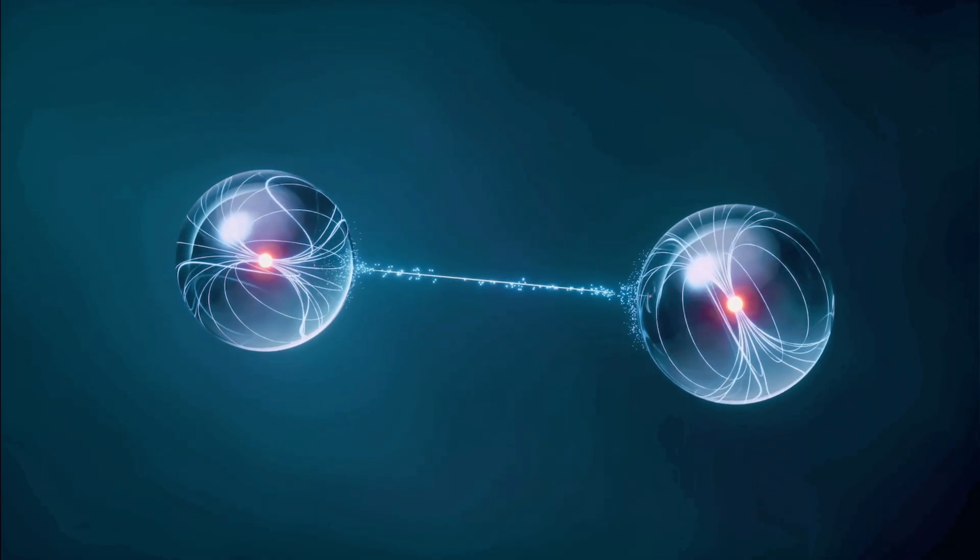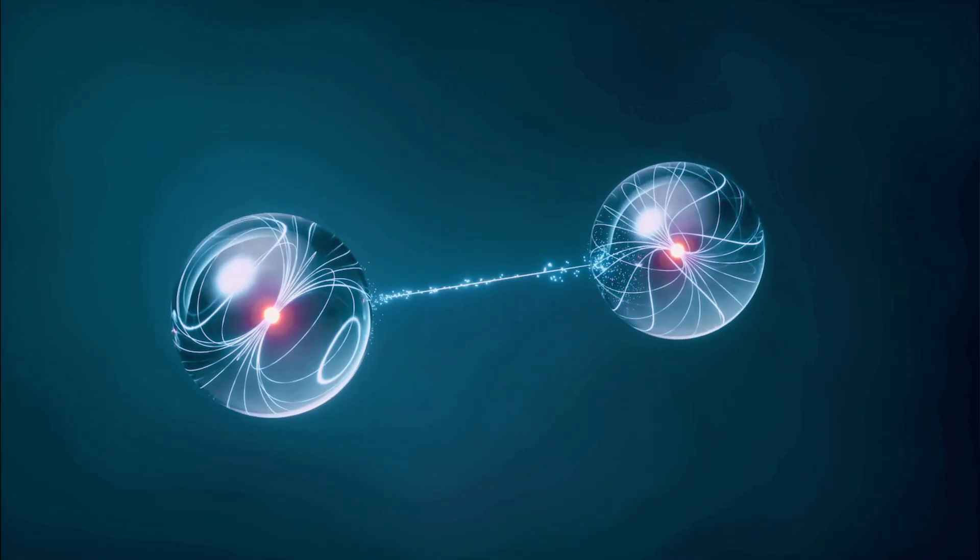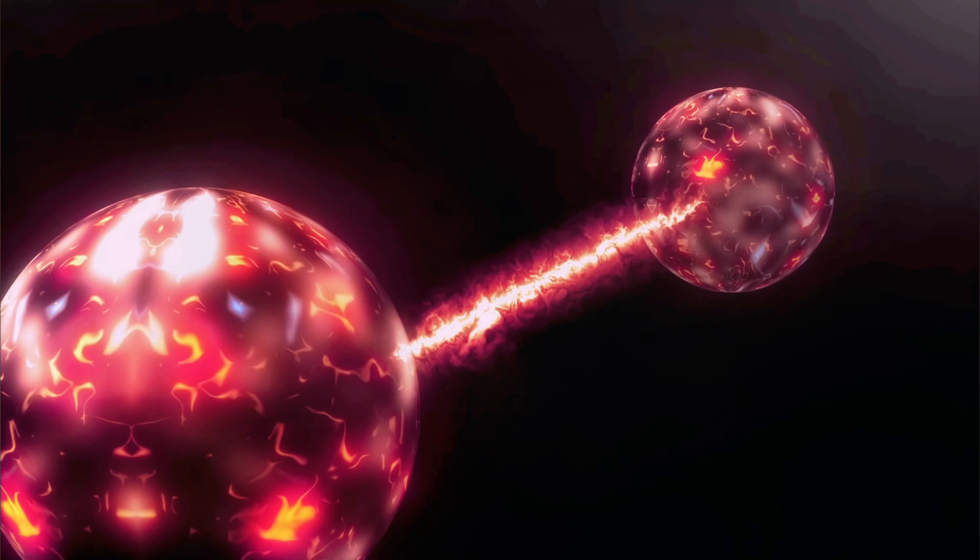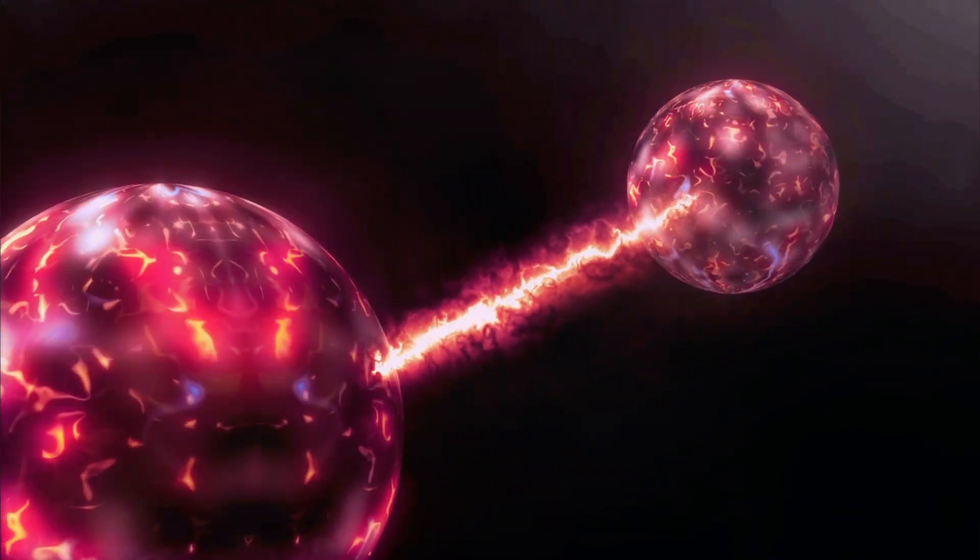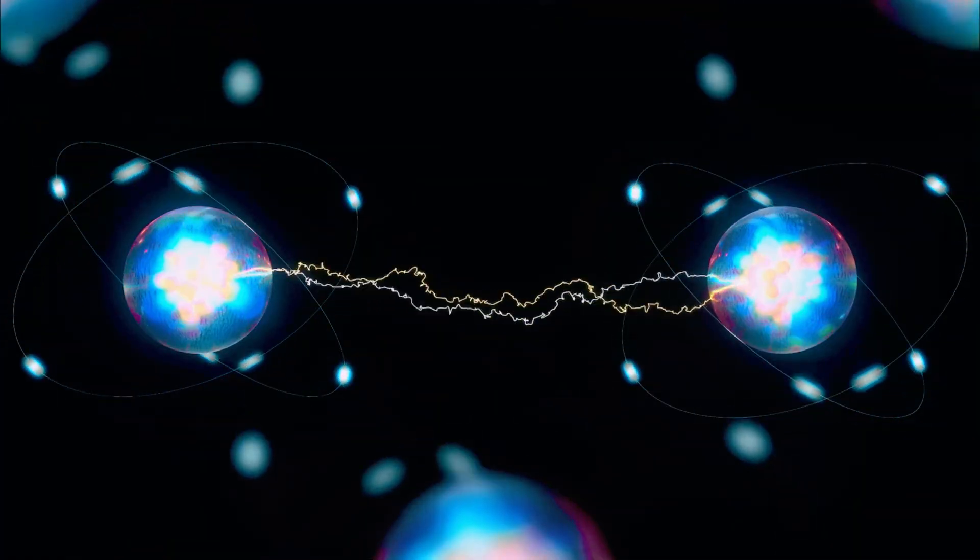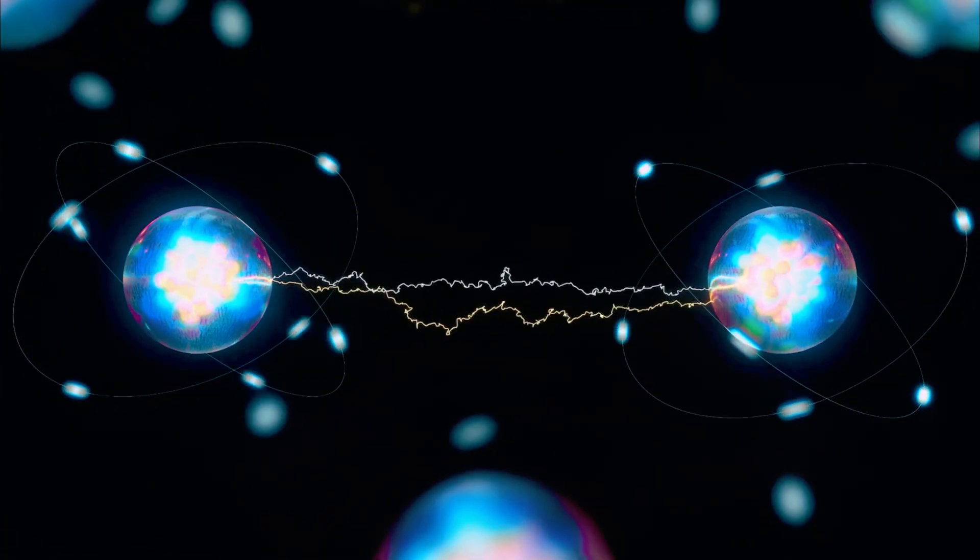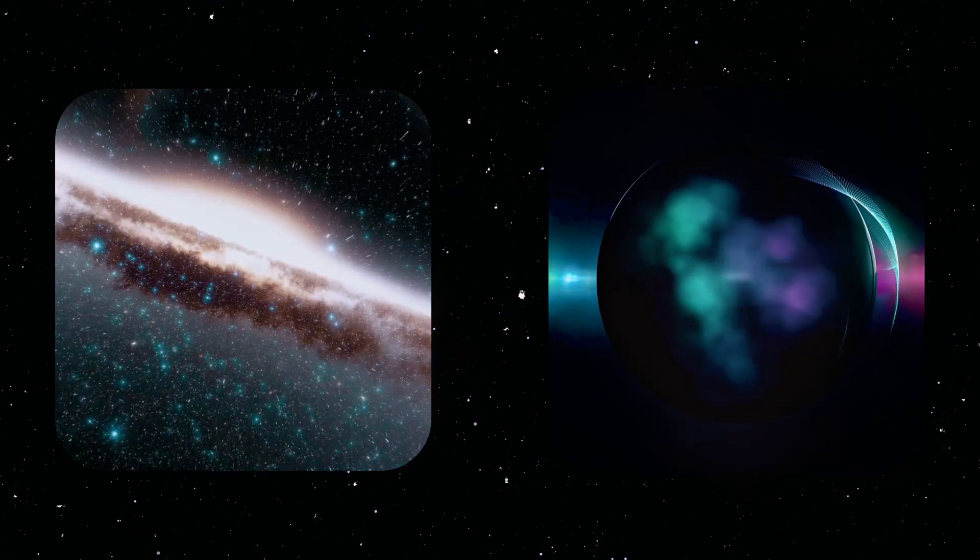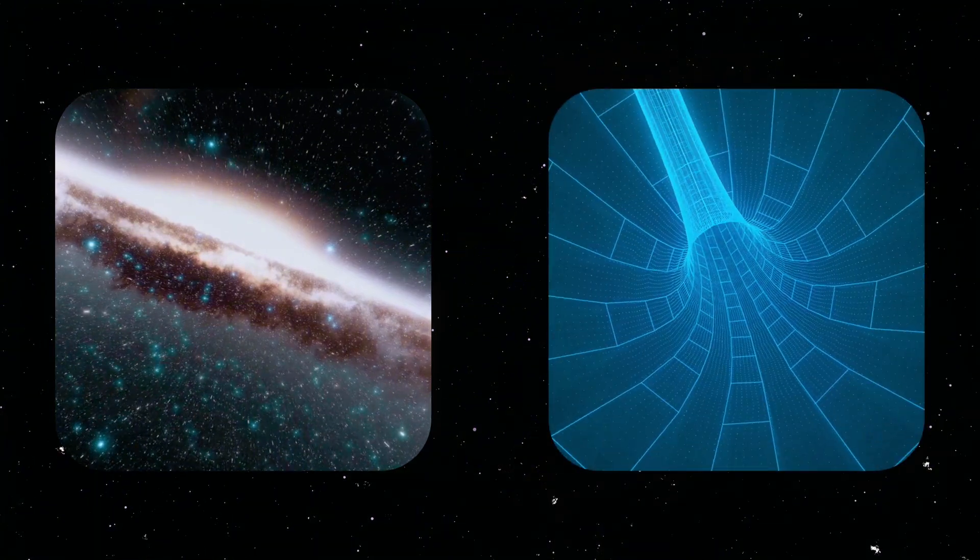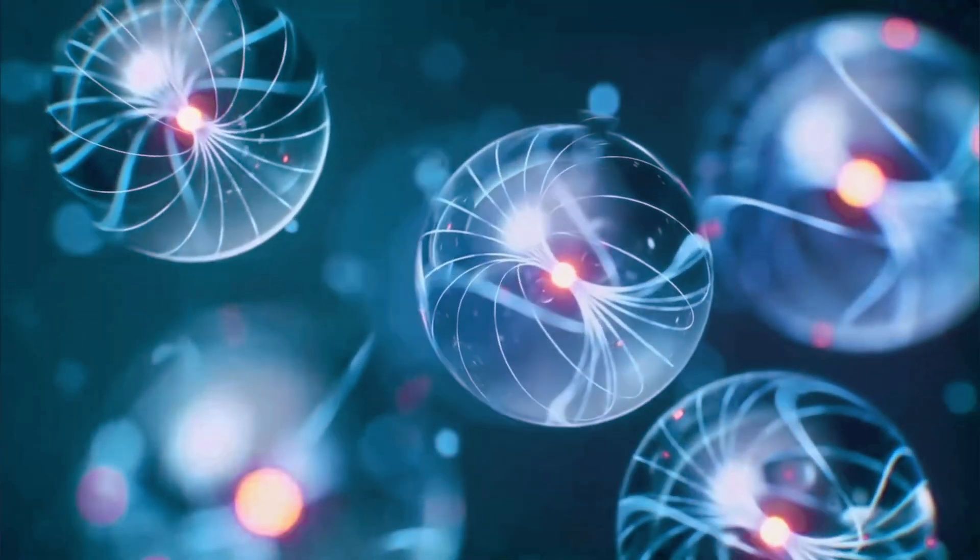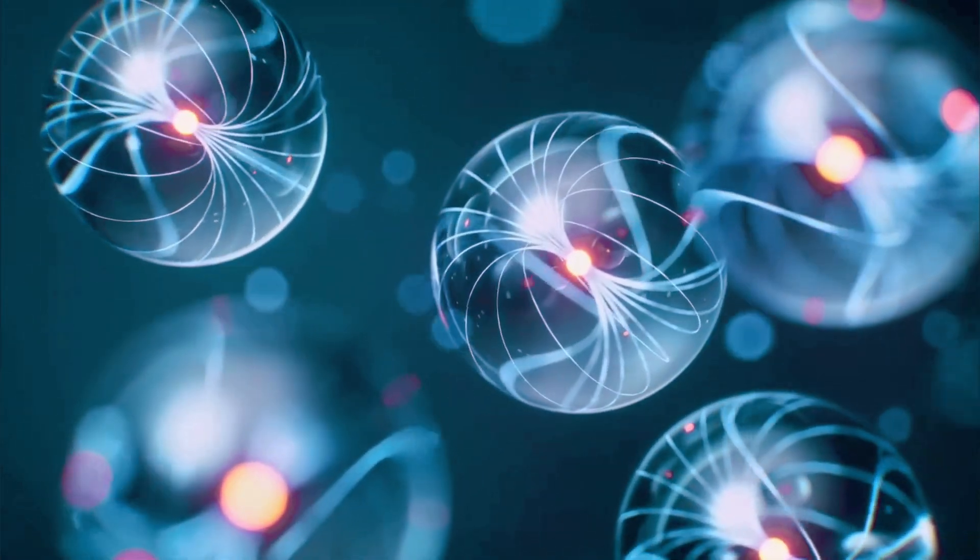Quantum entanglement is a phenomenon in quantum physics where two or more particles become interconnected in such a way that the state of one particle is directly related to the state of another, no matter the distance between them. When particles are entangled, a change in one particle's state will instantaneously affect the other, even if they are light years apart. This phenomenon, which left even Albert Einstein baffled, was famously dubbed spooky action at a distance.